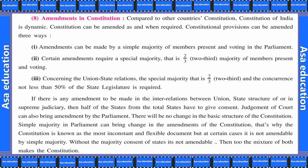Judgment of court can also bring amendment by the parliament. There will be no change in the basic structure of constitution. Simple majority in parliament can bring change in the amendments of the constitution — that's why the constitution is known as the most inconsistent and flexible document. But in certain cases it is not amenable by simple majority — without the majority or consent of states, it is not amenable. Then the mixture of both makes the constitution — inhi dono ka jo mixture hai, is se samvidhan banta hai.